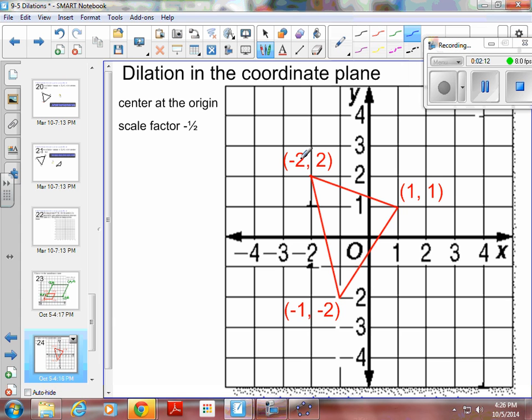So half of negative 2 would be a positive one, half of 2 with a negative would be a negative one. So that point is going to be positive one, negative one. So that point goes over to here.